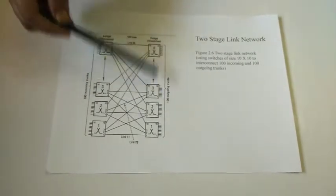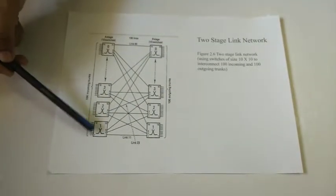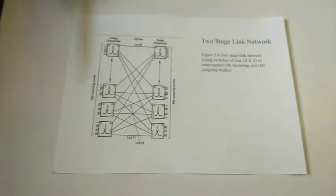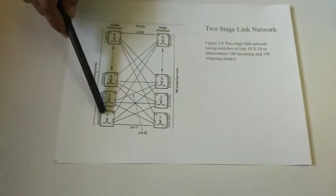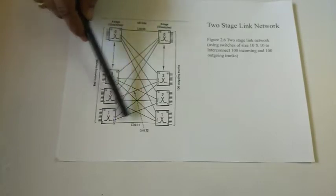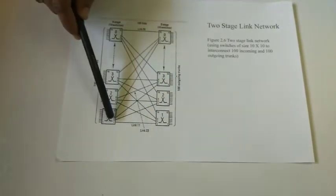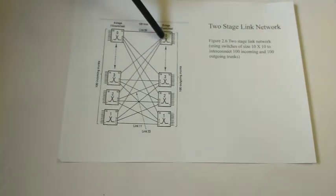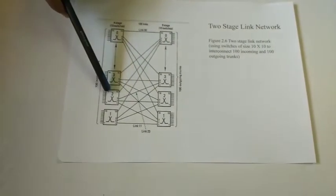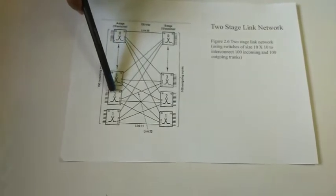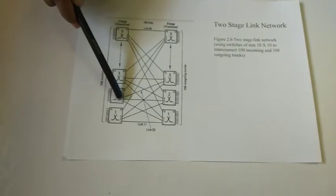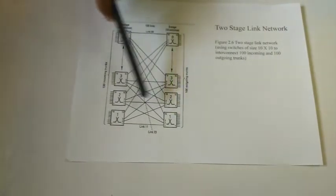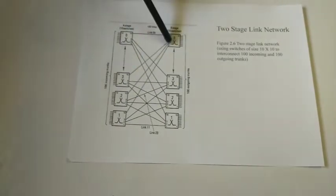We have 10 switches on this side and 10 switches on the other side, each numbered the same way — 1 to 10 links on each side. To understand the connections: starting from switch number 1, from 1 to 1 of the switch, from 2 to 1, from 3 to 1, and from 10 to 1. For the second switch: 1 is connected to 2, 2 is connected to 2, 3 is connected to 2, and 10 is connected to 2.